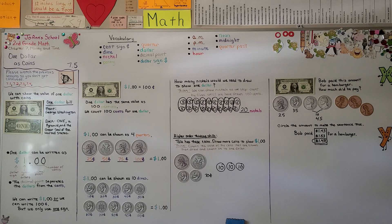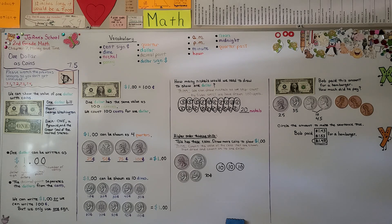In our next lesson, 7.6, we're going to talk about amounts greater than a dollar — like the money Bob paid for his hamburger. Have a wonderful day. I hope you'll join me next time. Bye!